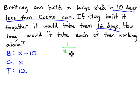Brittany, 1 over x minus 10, plus Cosmo's reciprocal, 1 over x, equals the team's reciprocal, 1 over 12.